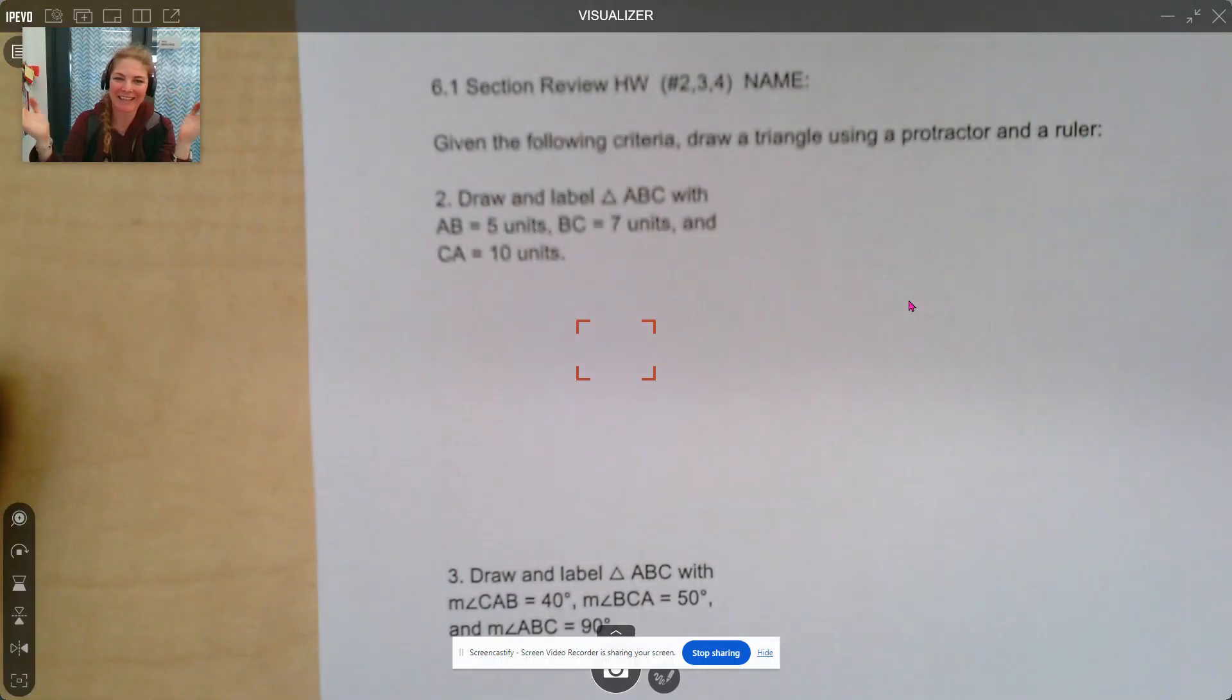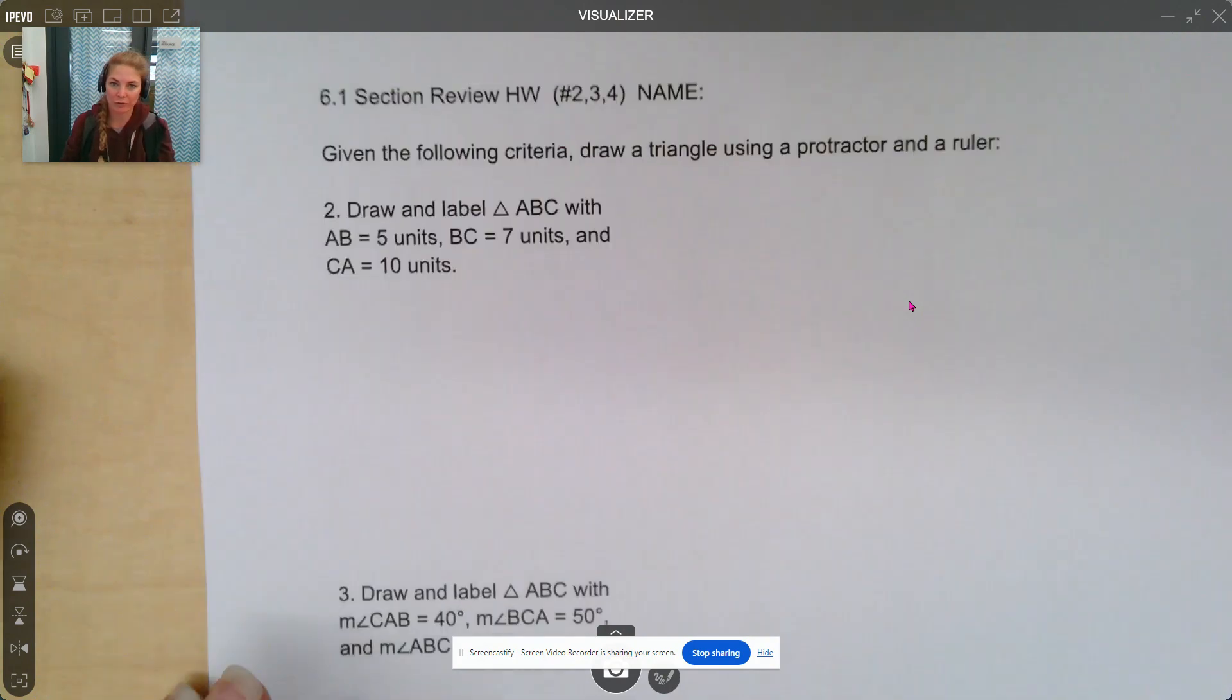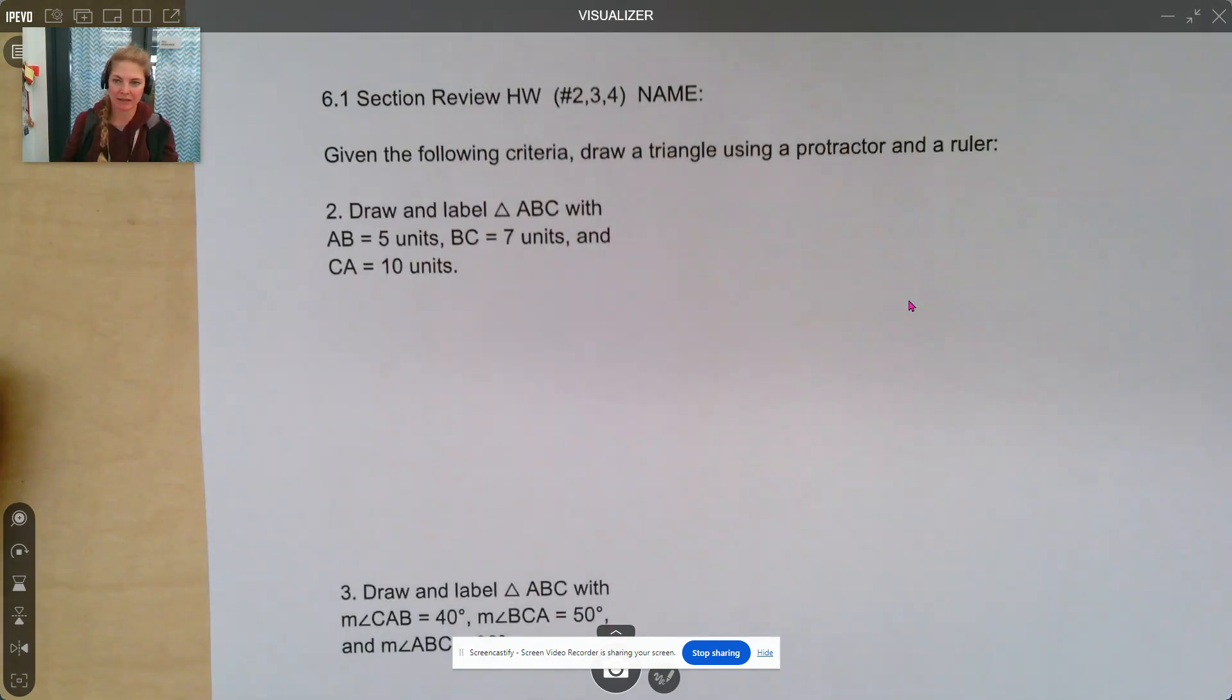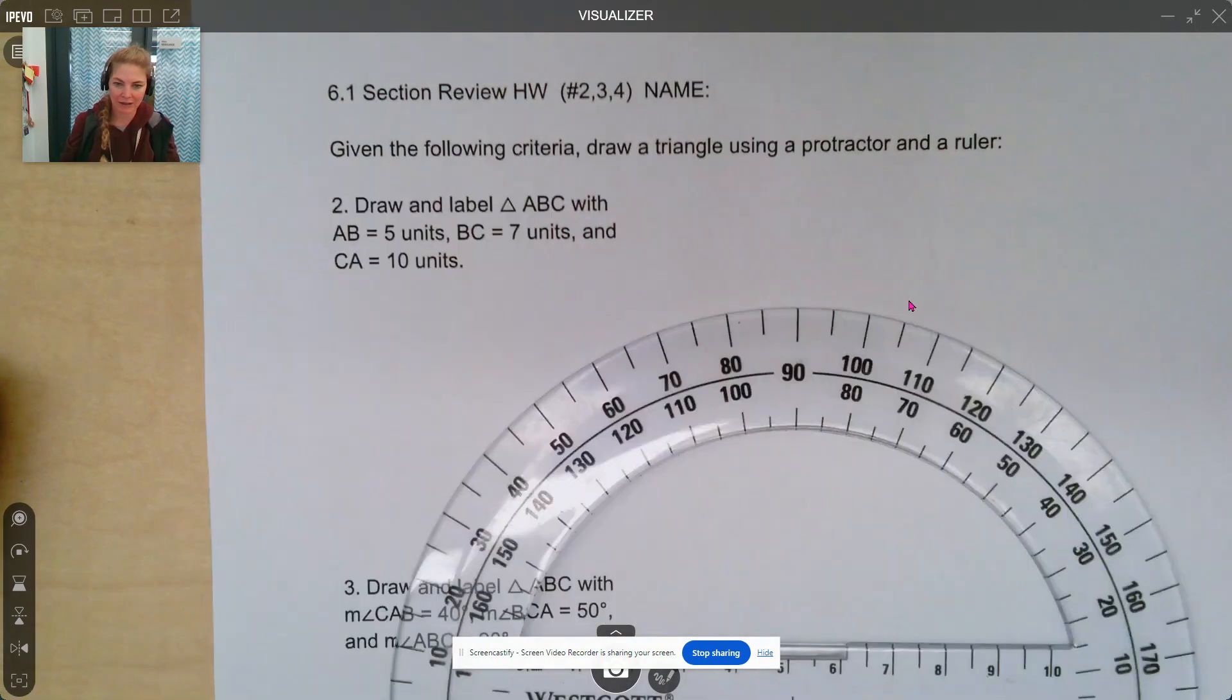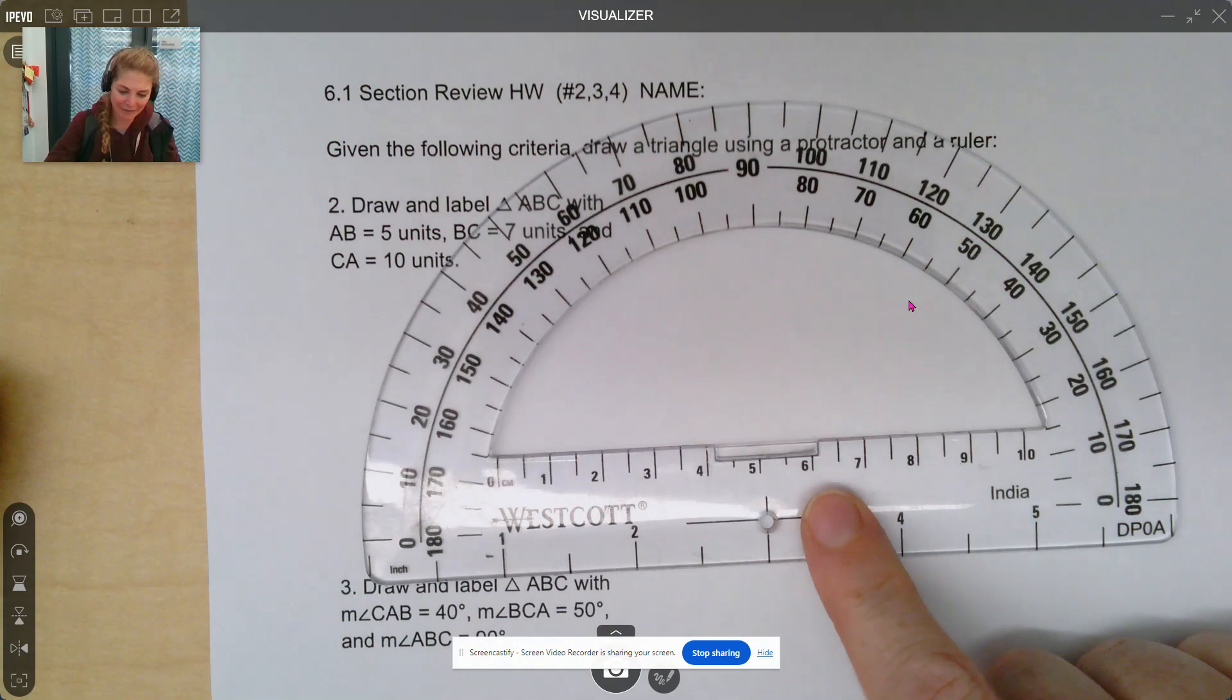Salutations, Winnie Mathematicians! Let's go over 6.1 section review homework, just 2, 3, and 4, because those are the ones you probably need to see someone doing it because it's using a protractor and a ruler, and look at that, your protractor has a ruler on it.